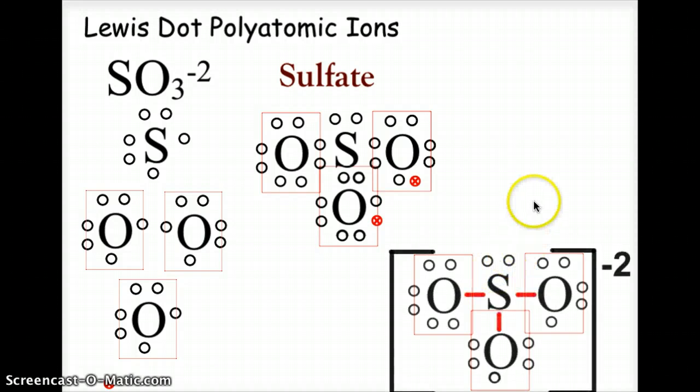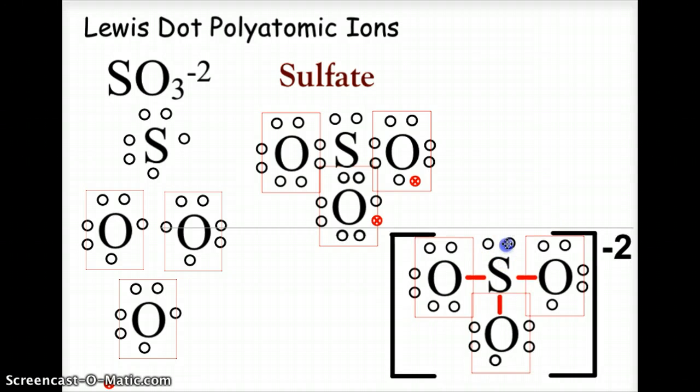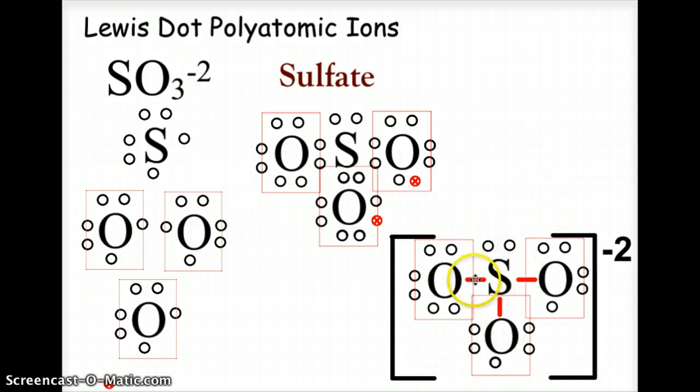When we actually draw the molecule, the molecule is going to be in brackets. In putting it in brackets we're going to show the bonds and then we have to show the atmospheric electrons. Because we added two electrons to complete this covalent structure, this is a negative two charge on the outside.